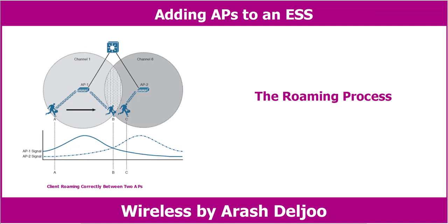Now let me explain the clean roaming process. What enables a client to roam in the first place? First, adjacent APs should be configured to use different non-overlapping channels, for example, channel 1 and channel 6. An AP using channel 1 must not be adjacent to other APs also using channel 1. Instead, a neighboring AP should use channel 6 or higher to avoid any frequency overlap with channel 1 in the 2.4 GHz band.